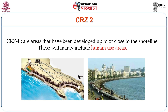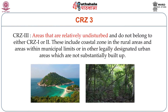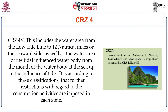CRZ2 areas are areas that have been developed up to or close to the shoreline — these mainly include human use areas. CRZ3 areas are relatively undisturbed and do not belong to either CRZ1 or CRZ2. These include coastal zones in rural areas and areas within municipal limits or legally designated urban areas which are not substantially built up — basically small towns on the coast. CRZ4 includes the water area from the low tide line to 12 nautical miles on the seaward side, as well as the water area of the tidal-influenced water body from its mouth at the sea up to the influence of tide. According to this classification, there are further restrictions about different kinds of construction activities in each zone.